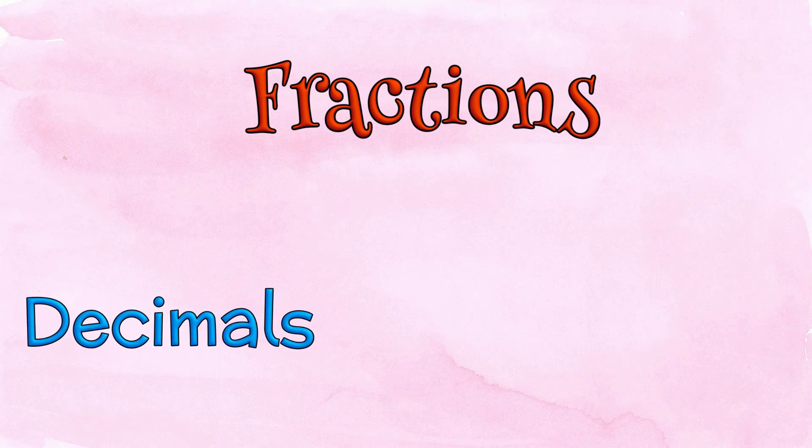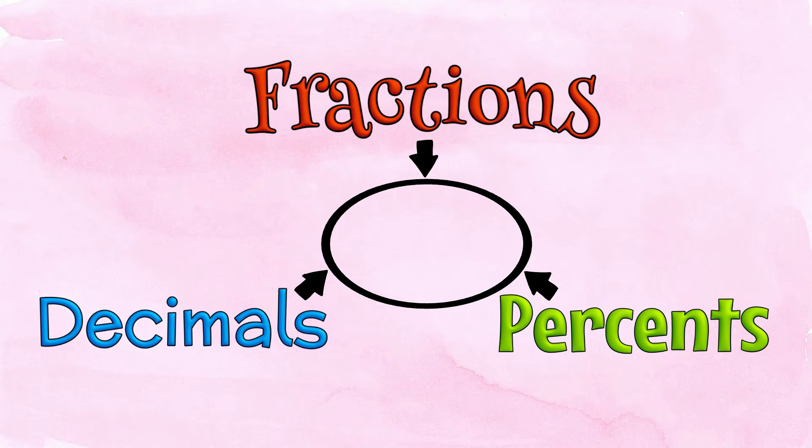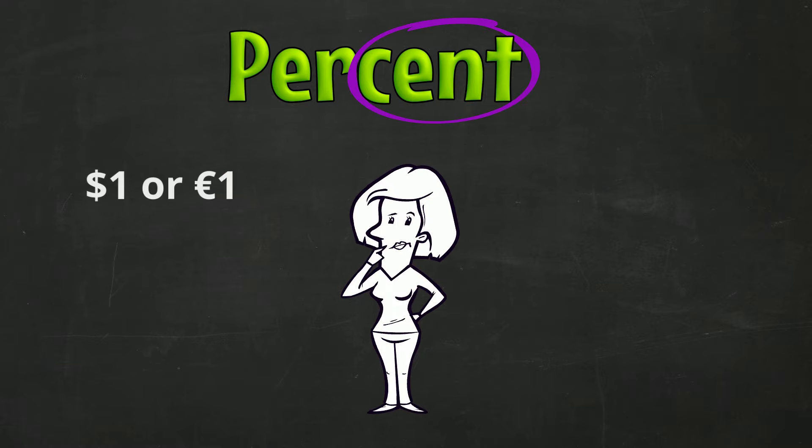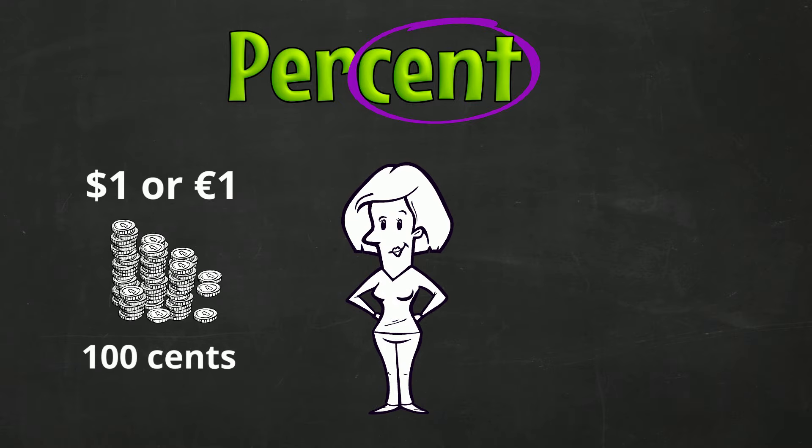Fractions, decimals, and percents are all ways of showing parts of a whole. Percent might be a new term to you. Notice the word cent in there. We know that 1 dollar or 1 euro has 100 cents.